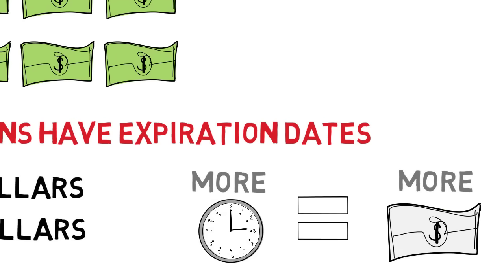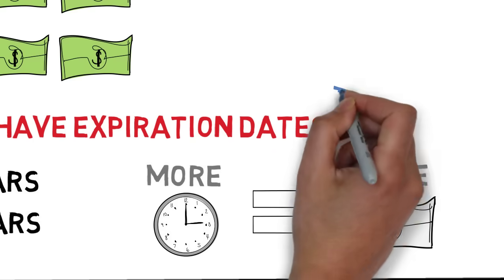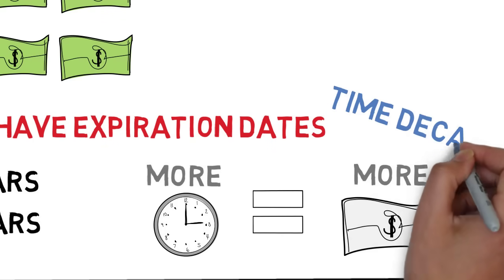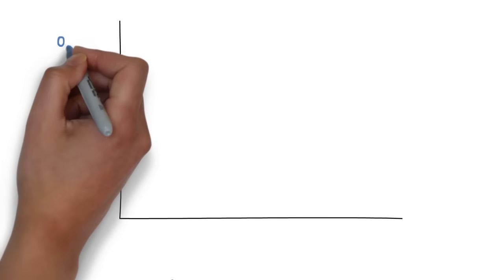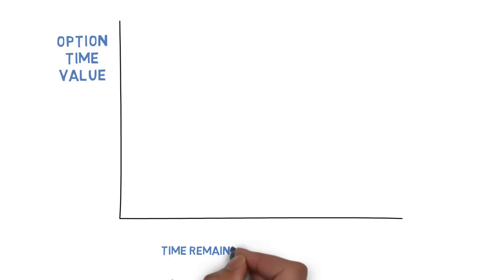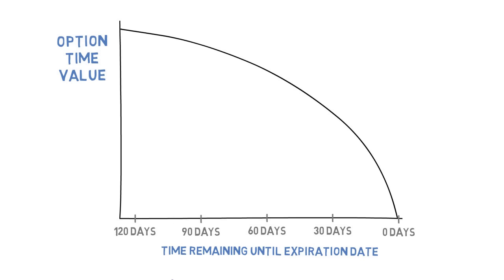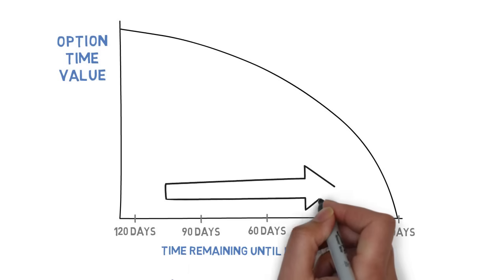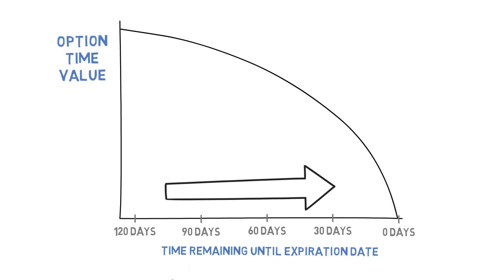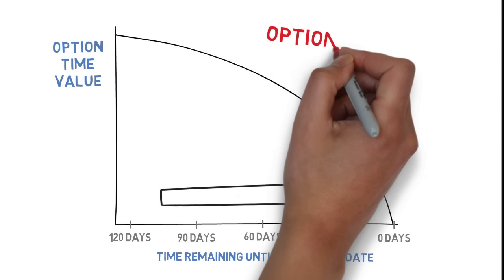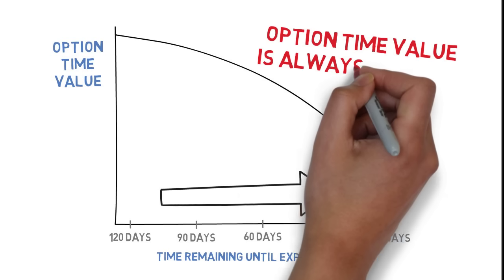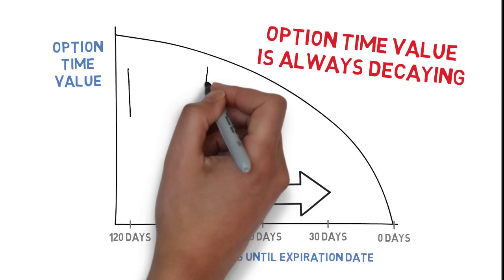Naturally, as time passes, an option's time value will decay. This is known as time decay. The curve will look something like this. As you can see, time decay isn't linear — it's exponential, meaning that as you get closer to expiration, time decay will rapidly speed up. The important thing to understand is that an option's time value is always decaying, 100% of the time, every day, every hour.